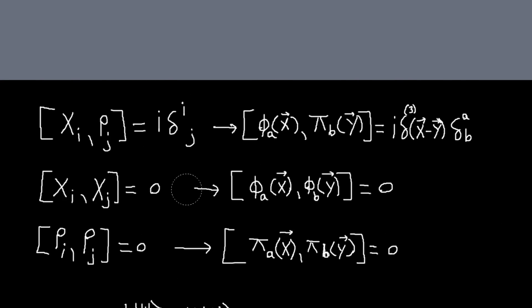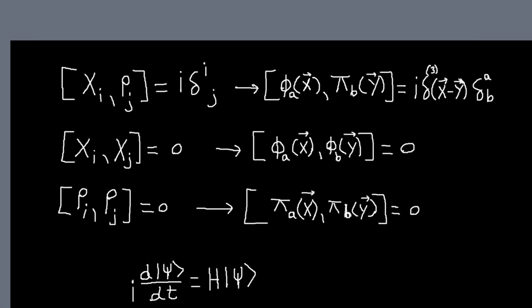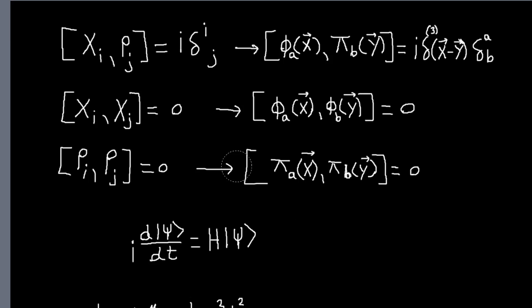We're going to be working in the Schrodinger picture. When we're talking about classical fields, our fields depended on space-time, the four coordinates time and space. But if we're going to make our fields Schrodinger operators, Schrodinger operators don't depend on time, so they will just become functions of space alone.